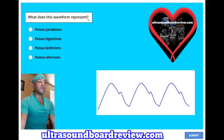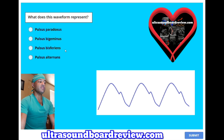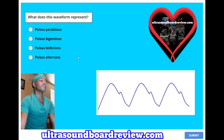What does this waveform represent? A, pulsus paradoxus; B, pulsus bigeminis; C, pulsus bisferiens; or D, pulsus alternans? The answer is B, pulsus bigeminis.